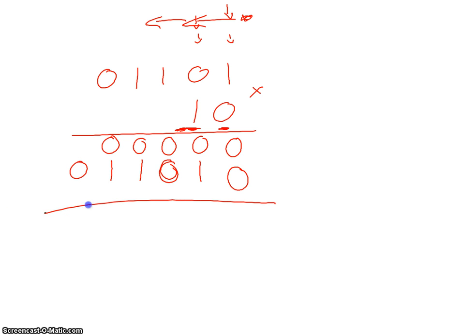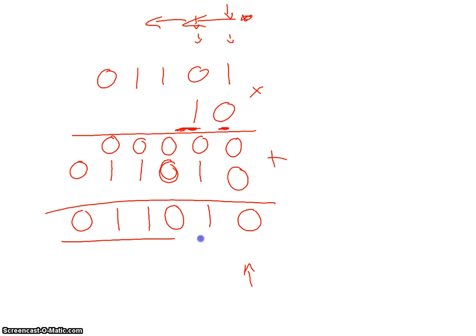This is where the binary addition comes in. We put a line across and add the two rows together. Starting from the right: zero plus zero is zero, zero plus one is one, zero plus zero is zero, zero plus one is one, zero plus one is one, and then we have our zero on the left. That should be the answer to our binary multiplication.